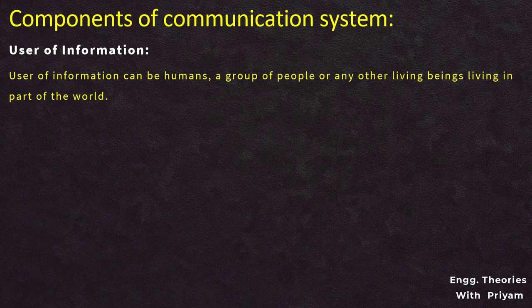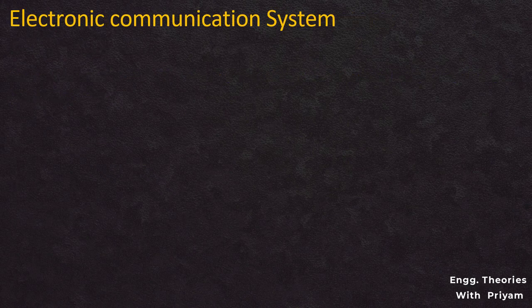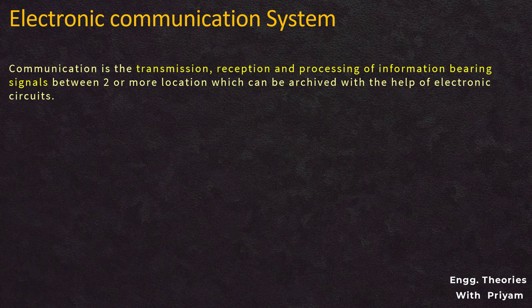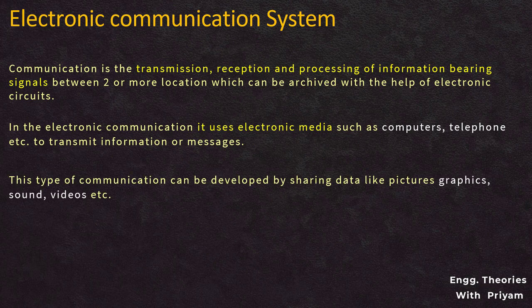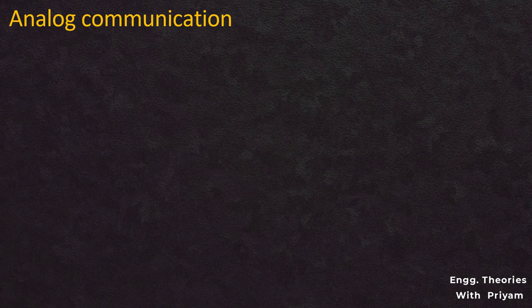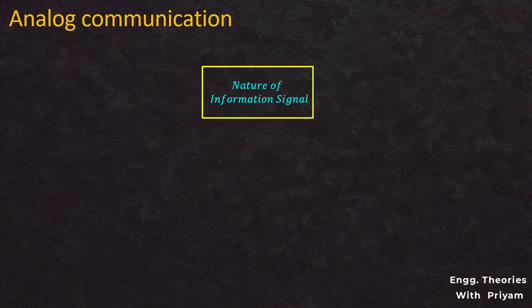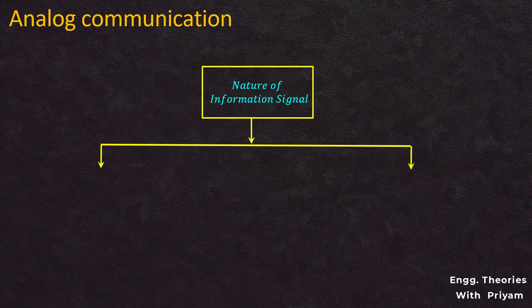The electronic communication system is a combination of transmission, reception, and processing of information-bearing signals between two or more locations, achieved with the help of electronic circuits. It uses electronic media to transmit information or messages using computers, telephones, etc. This type of communication can involve sharing data like pictures, graphics, sound, and videos. Due to electronic communication, there is no necessity for people to be physically present, and communication can be carried out among people around the world. Electronic communications are of several types: based on the nature of the information signal, it can be divided into analog communication and digital communication.